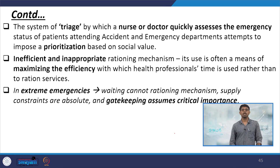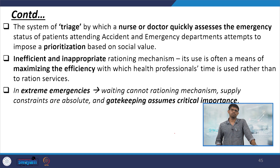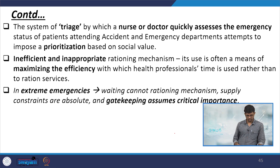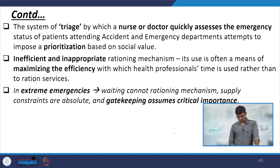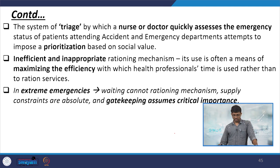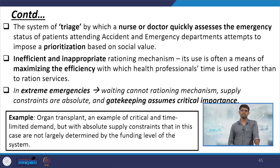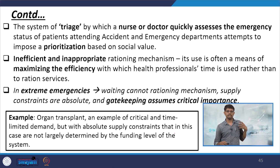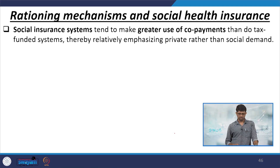Inefficient and inappropriate rationing mechanisms are often means of maximizing the efficiency with which health professional time is used, rather than rationing services. In extreme emergencies, waiting cannot be a rationing mechanism and supply restraints are absolute — gate keeping assumes critical importance. Examples discussed include organ transplant cases.